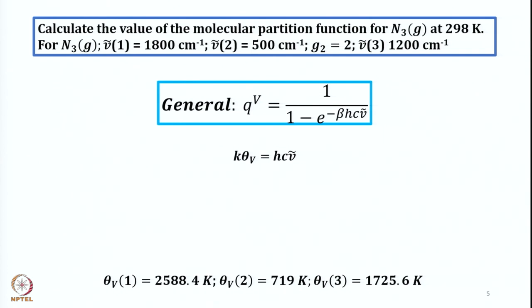Now let us look at another application. The question is: calculate the value of the molecular partition function for N₃ at a temperature of 25°C (298 K). For N₃, the wave numbers are given: the first is 1800 cm⁻¹, the second is 500 cm⁻¹ (doubly degenerate), and the third is 1200 cm⁻¹.